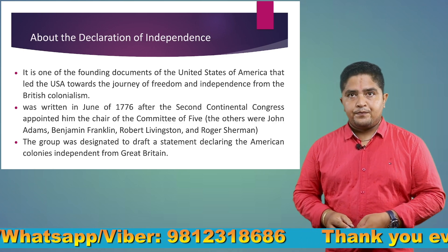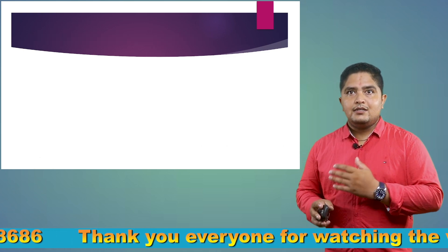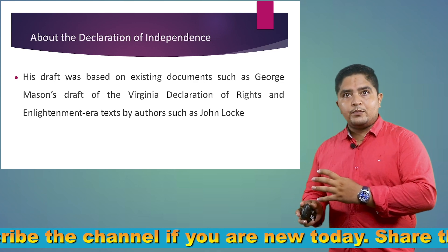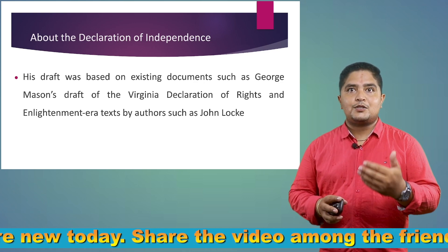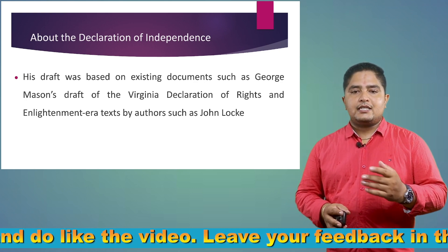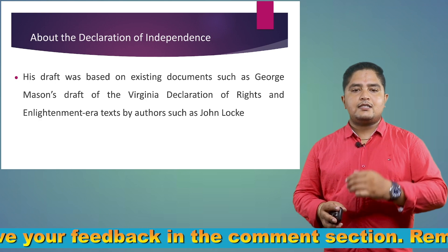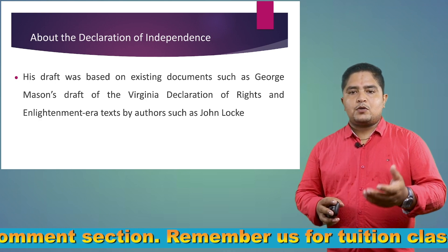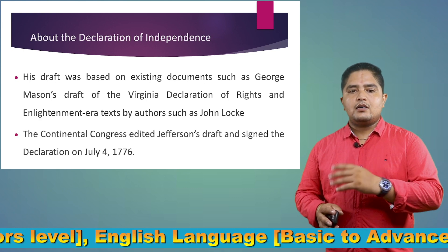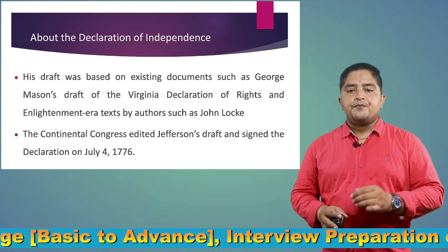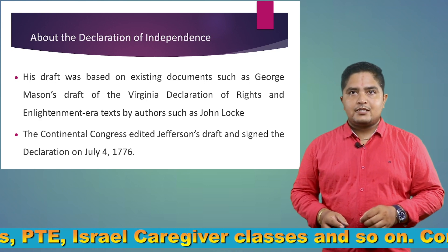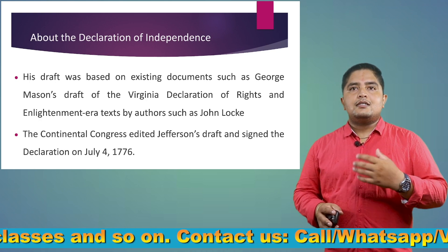The Declaration of Independence was drafted based on other documents. One key source was George Mason's Virginia Declaration of Rights, along with Enlightenment texts. John Locke's ideas were also incorporated. The draft was edited by the Continental Congress, and Jefferson finalized it. It was signed on 4th July 1776, which is marked as Independence Day.